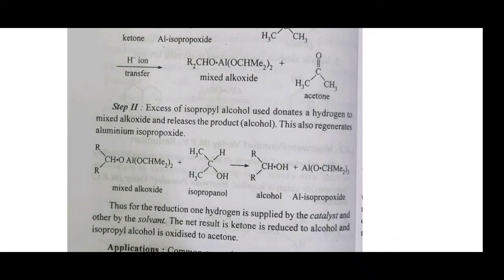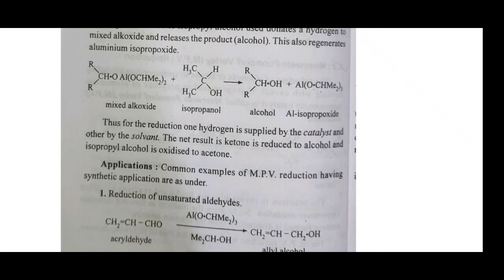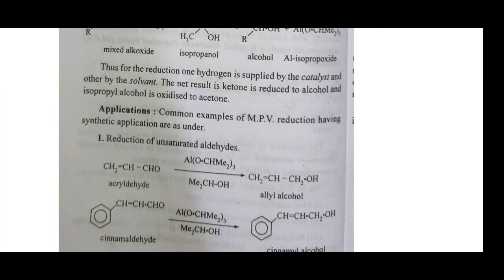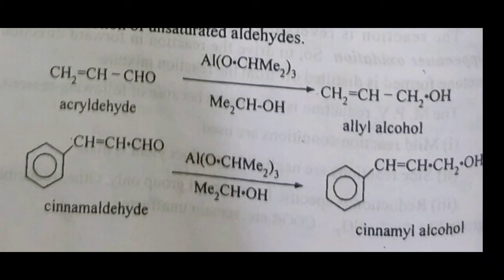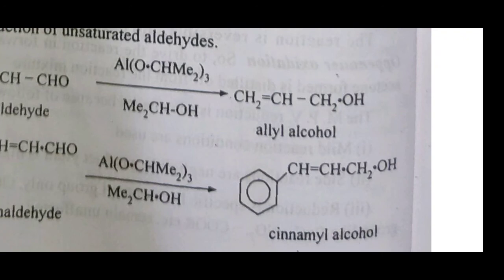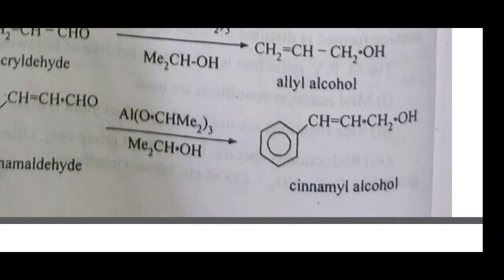After the mechanism, we study some applications of MPV reduction. This reagent is specified for reduction of aldehydes and ketones. The first application is reduction of unsaturated aldehydes. For example, acrylaldehyde in the presence of aluminum isopropoxide is converted to allyl alcohol — the carbonyl group is converted to CH₂OH. The second example is cinnamaldehyde, which in the presence of aluminum isopropoxide is converted to the corresponding cinnamyl alcohol — the aldehyde group is converted to CH₂OH.